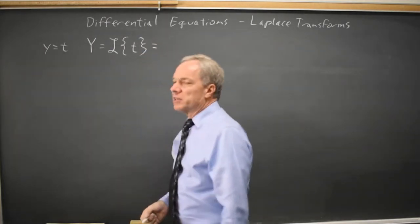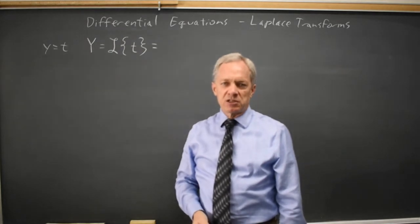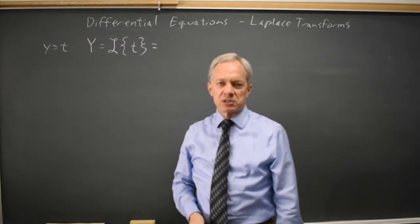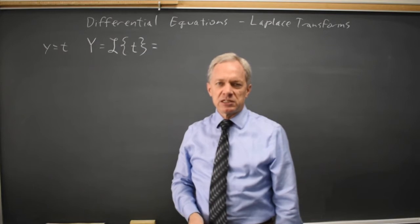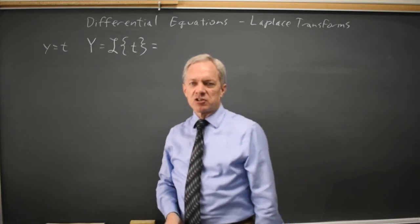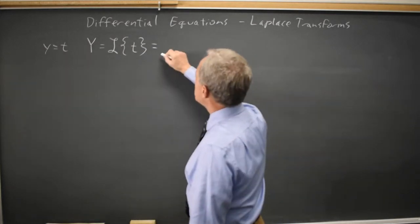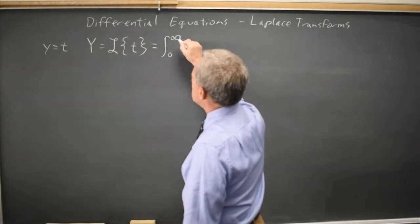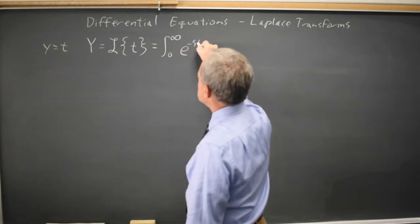A general integral transform is the integral from alpha to beta of k of st times f of t dt. For the Laplace transform, alpha and beta are zero and infinity, and k of st is e to the negative st.